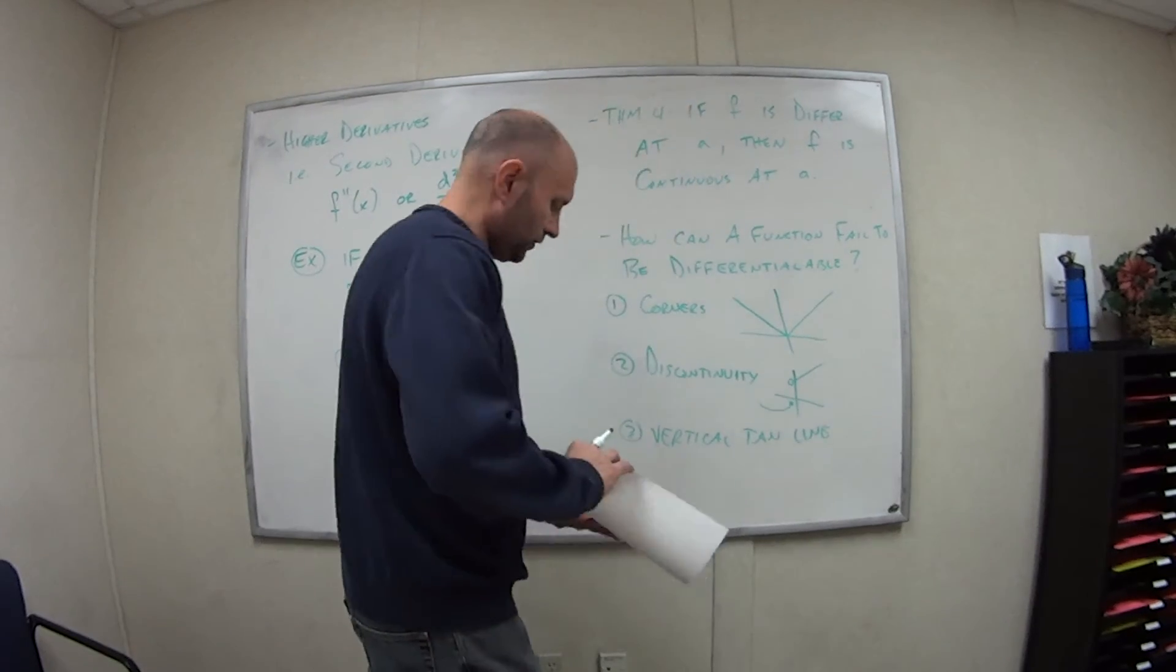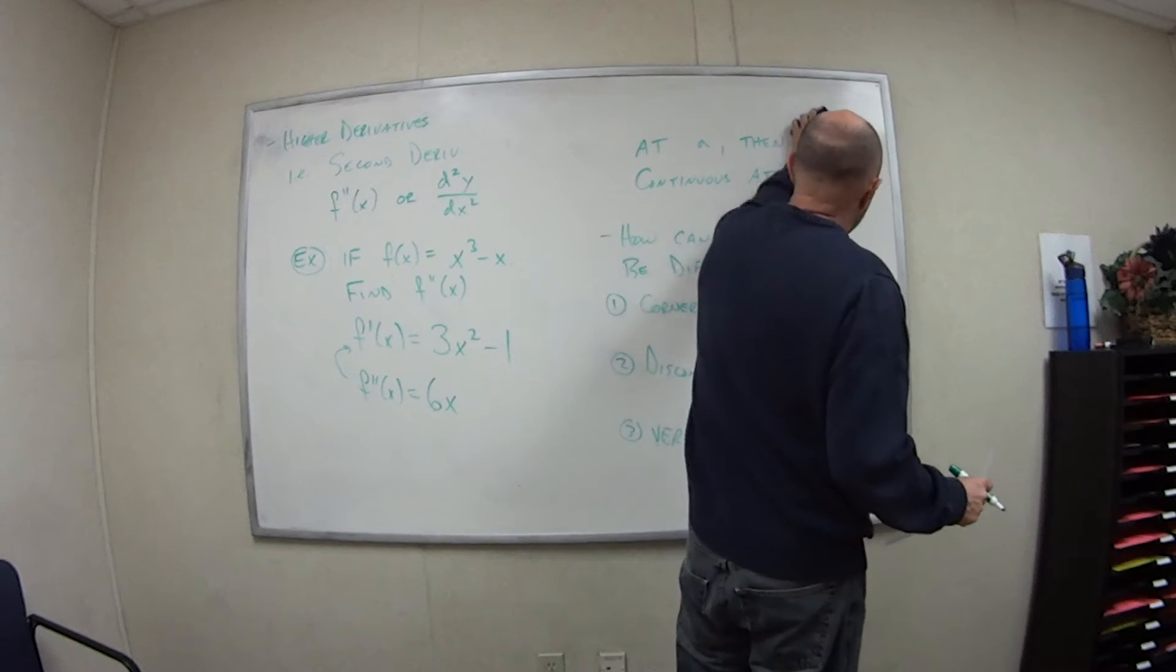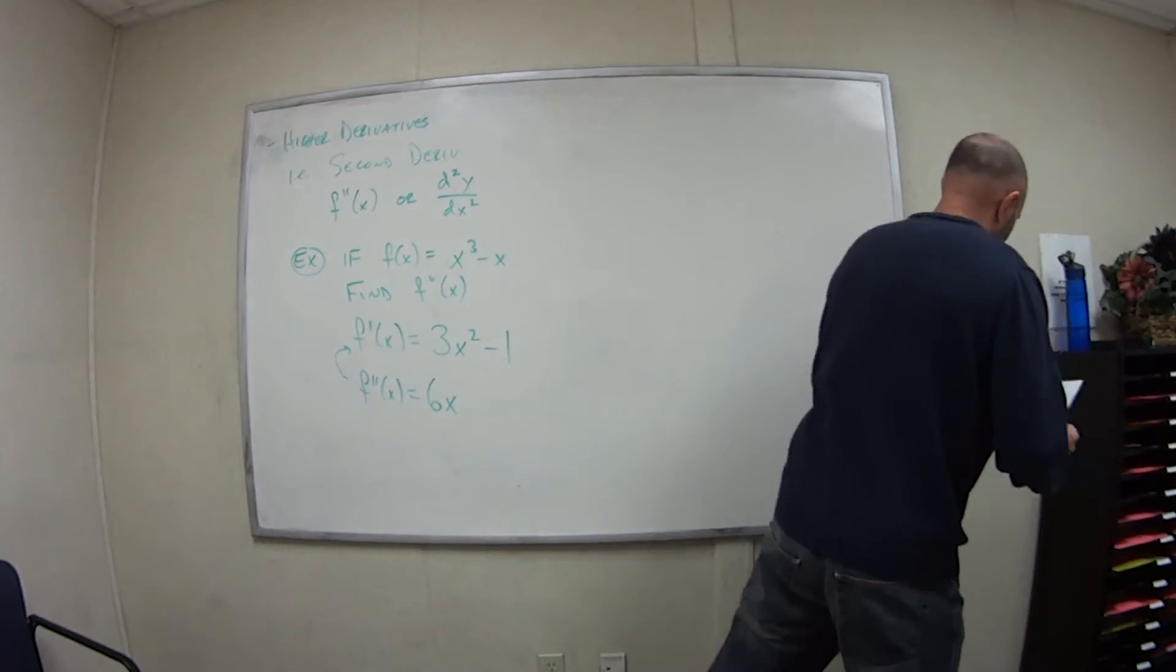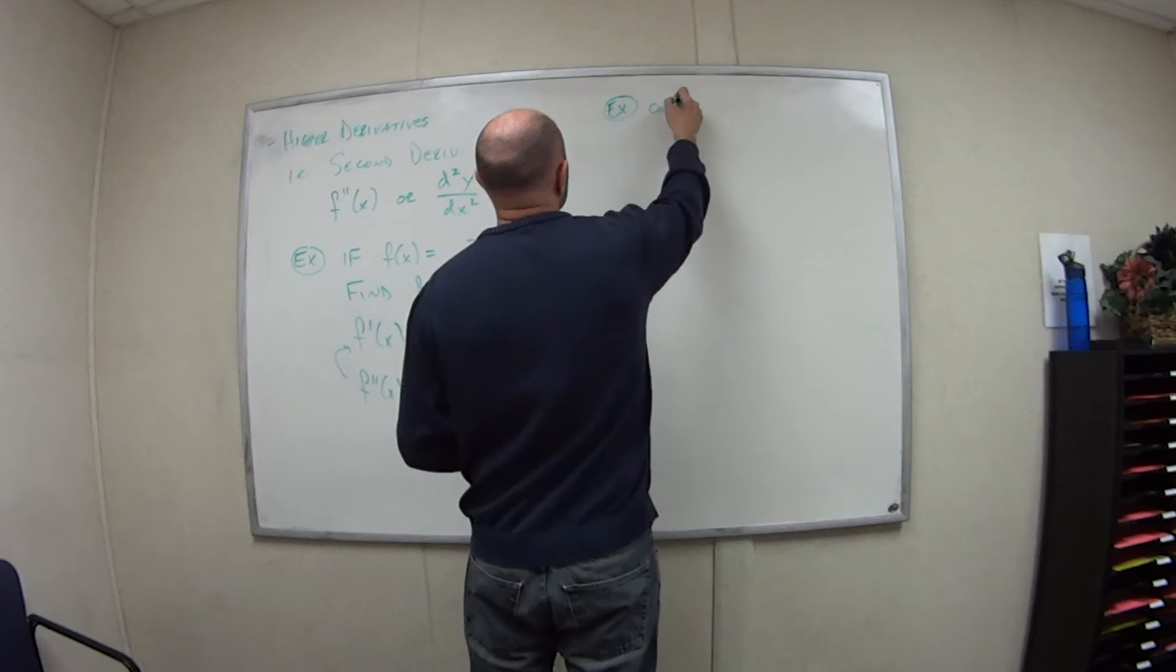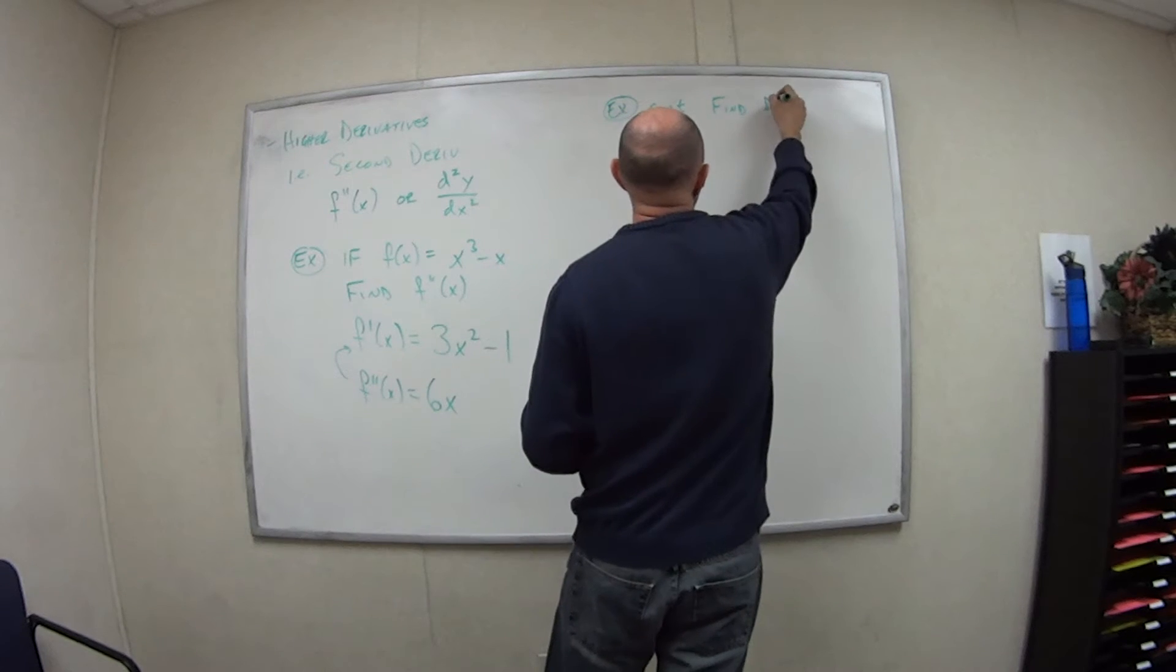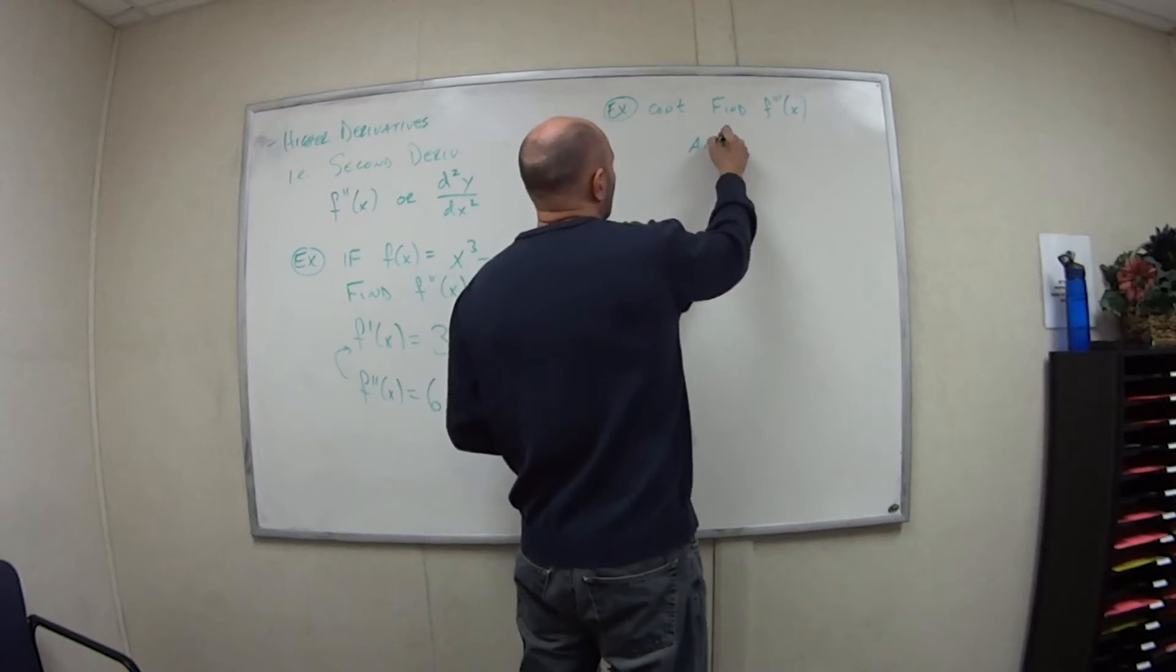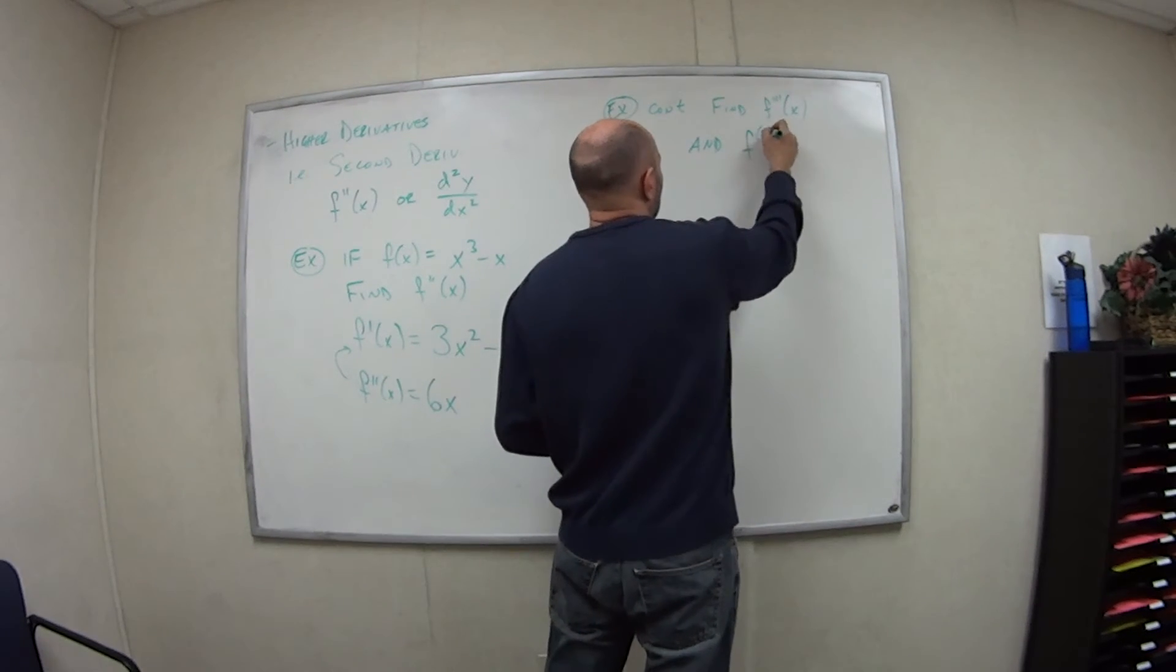If we continue, so that's the second derivative, we can have the third derivative, fourth derivative, etc., etc., etc., as long as we want to go. So if we continue on here, the example continued: find the third derivative, so that gets three little tick marks there.